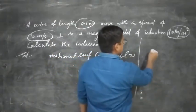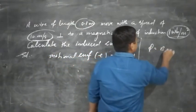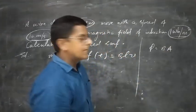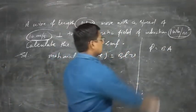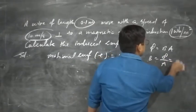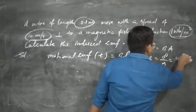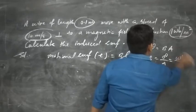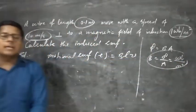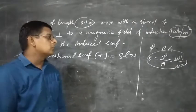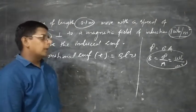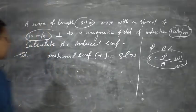We know that flux φ is equal to BA, because φ is a dimensionless — actually φ is in Weber. So B is equal to φ by A, where φ is in Weber and area is in meter square. So the unit of B is Weber per meter square. Clear?